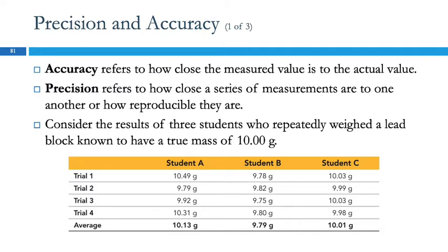If we think of shooting arrows at a target, accuracy would be hitting the bullseye. You're aiming for the center and you hit it right there. That's accurate.